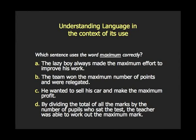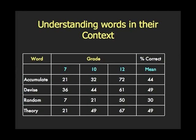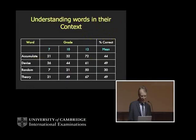I know you've all found the right answer without any difficulty. But the surprising thing is that when you look at the results with students — for grade 7, grade 10, grade 12 — this has been done several times over the years. For the word 'accumulate,' only 21% of grade 7 students can pick the correct answer in a multiple choice test. By grade 12 it's 72%, which makes us a little bit happy. But even at that age, the fact that only 72% get it right is a little worrying. And the mean is 44%.